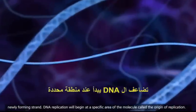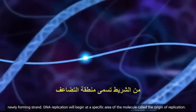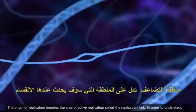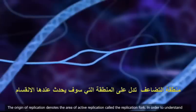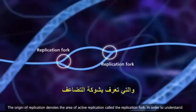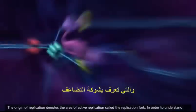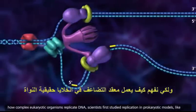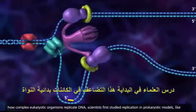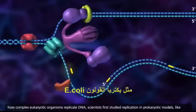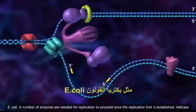DNA replication will begin at a specific area of the molecule called the origin of replication. The origin of replication denotes the area of active replication called the replication fork. In order to understand how complex eukaryotic organisms replicate DNA, scientists first studied replication in prokaryotic models like E. coli.